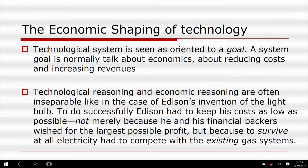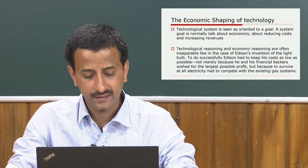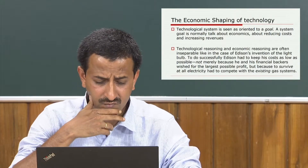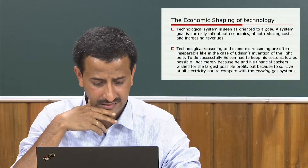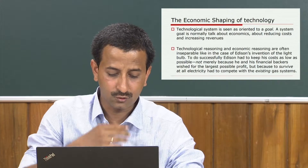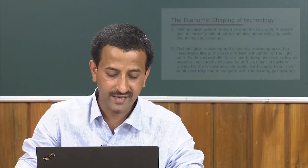We can also argue that efficiency may be uneconomical and inefficiency may be economical — we will see that in the lectures to follow. Technological reasoning and economic reasoning are often inseparable, like in the case of Edison's invention of the light electric bulb. Edison was quite consciously the designer of a system. He intended to generate electricity, transmit it to consumers, and to sell them the apparatus they needed to make use of it.